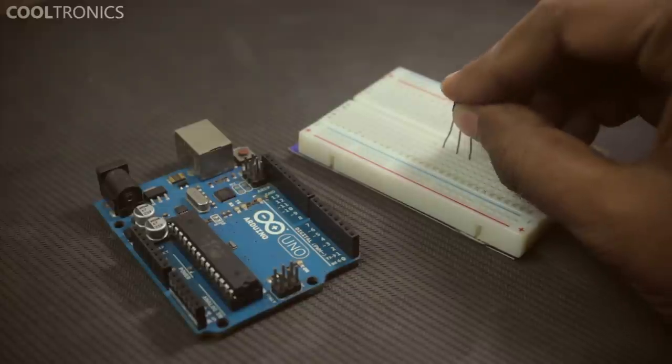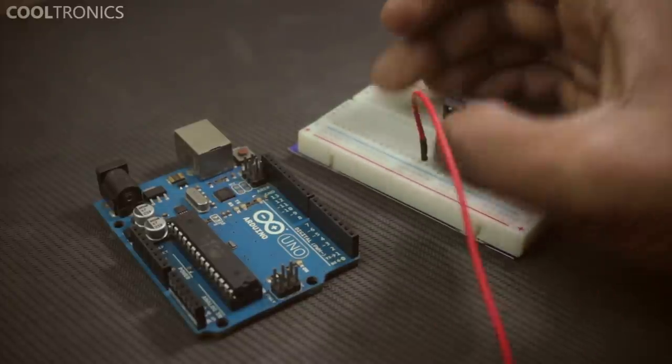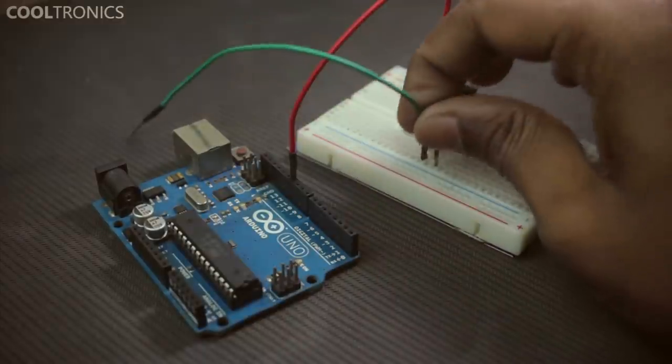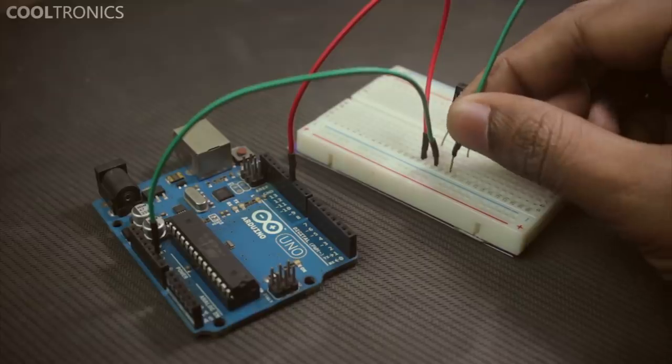Connect the output pin of the IR receiver, which is on the left, to pin 11 on the Arduino. The middle pin is ground and the right is VCC.